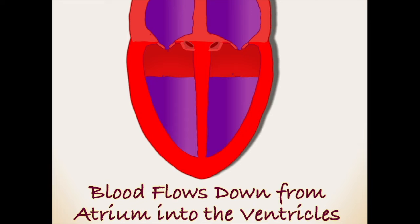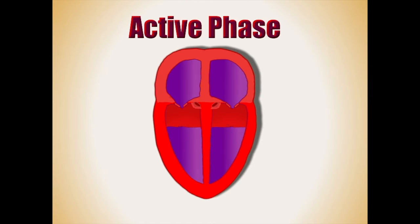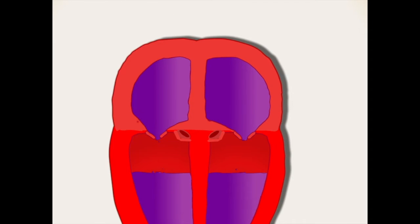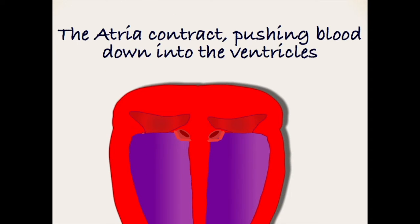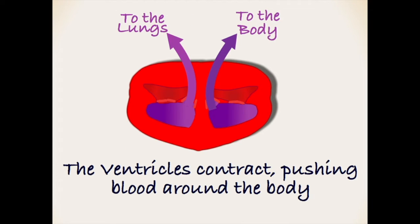With the chambers now full, the active phase of the cycle occurs. First the atrium contract, emptying their contents into the ventricles, increasing the volume of blood within the lower chambers. Now the ventricles contract — the left ventricle pushing the oxygen-saturated blood out towards the body's organs, the right side pushing the deoxygenated blood back towards the lungs.